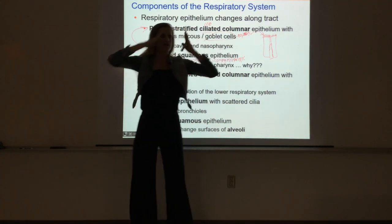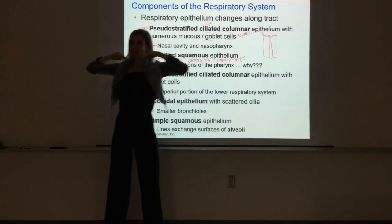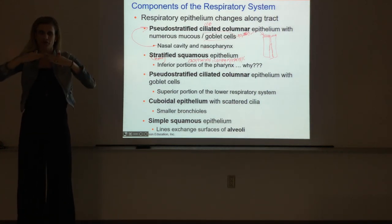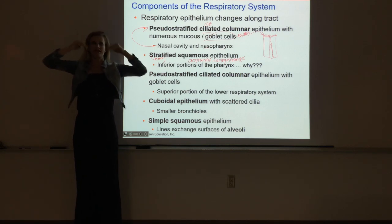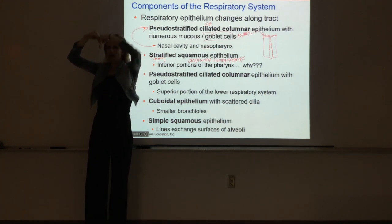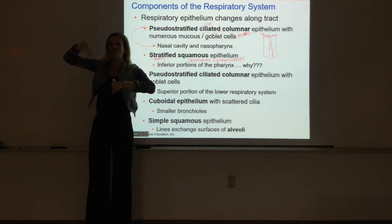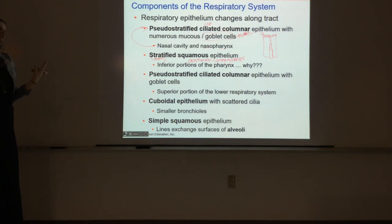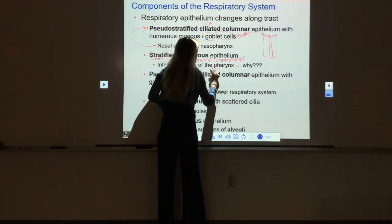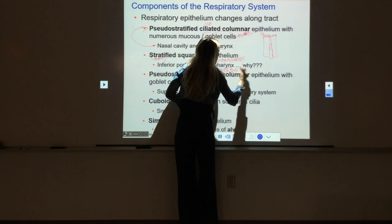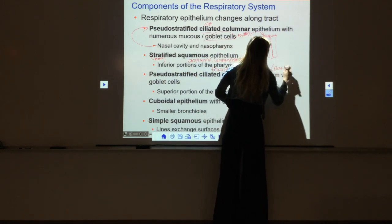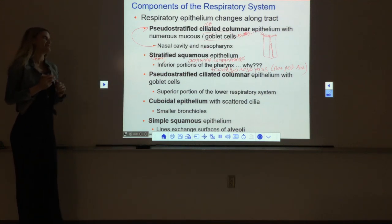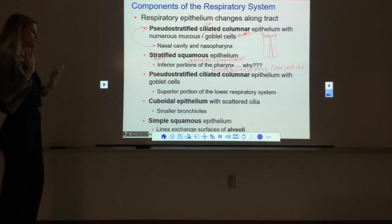Also, cilia function to push substances in one direction. In the throat, we're pushing food and water down forcefully with muscles, so it doesn't make sense to have cilia beating up toward the mouth while muscles push stuff against them - we would constantly be destroying the cilia and wasting energy going in the wrong direction. So the main point is: in the lower portions of the pharynx food and water also pass, we need stratified layers to provide protection, and there's no point in having cilia present since they'd just beat against the food and water we're swallowing.